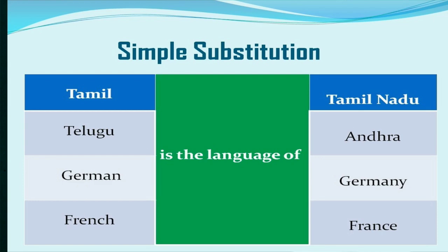On the extreme right-hand side there are words like Germany, Tamil Nadu, France, and Andhra. It is just like a match-the-following exercise. So: Tamil is the language of Tamil Nadu; Telugu is the language of Andhra; French is the language of France. The basic structure — 'is the language of' — remains the same in each case. Similarly, you can frame other sentences using prototypes like 'is the worship place of,' 'is the currency of,' 'is the language of,' 'is the capital of,' and so on.